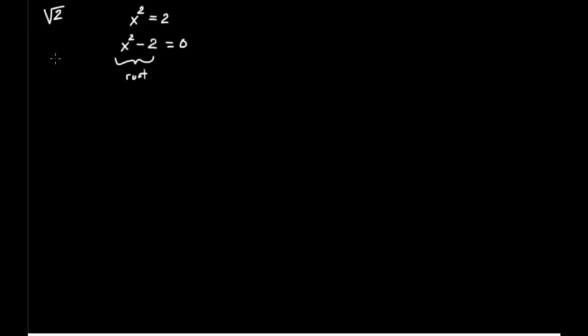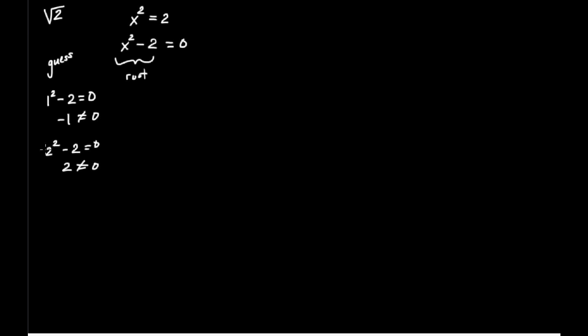As is normally done with Newton's Method, we first make a guess for the solution. Trying x equals 1 gives 1 squared minus 2 equals negative 1, not zero — too small. Trying x equals 2 gives 4 minus 2 equals 2, not zero — too big. So the square root of 2 lies between 1 and 2.